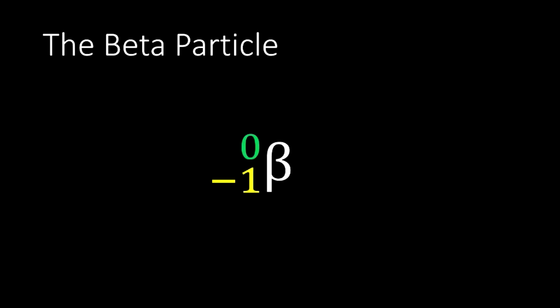Here is our isotope notation for a beta particle. You'll notice this B-looking letter that has a little tail, that is the Greek letter beta. Just like we use the Greek letter alpha for our alpha particle, we use the Greek letter beta for our beta particle. One strange thing you'll notice is that it has a negative sign in front of what should be the atomic number. We'll explain that as this video proceeds.